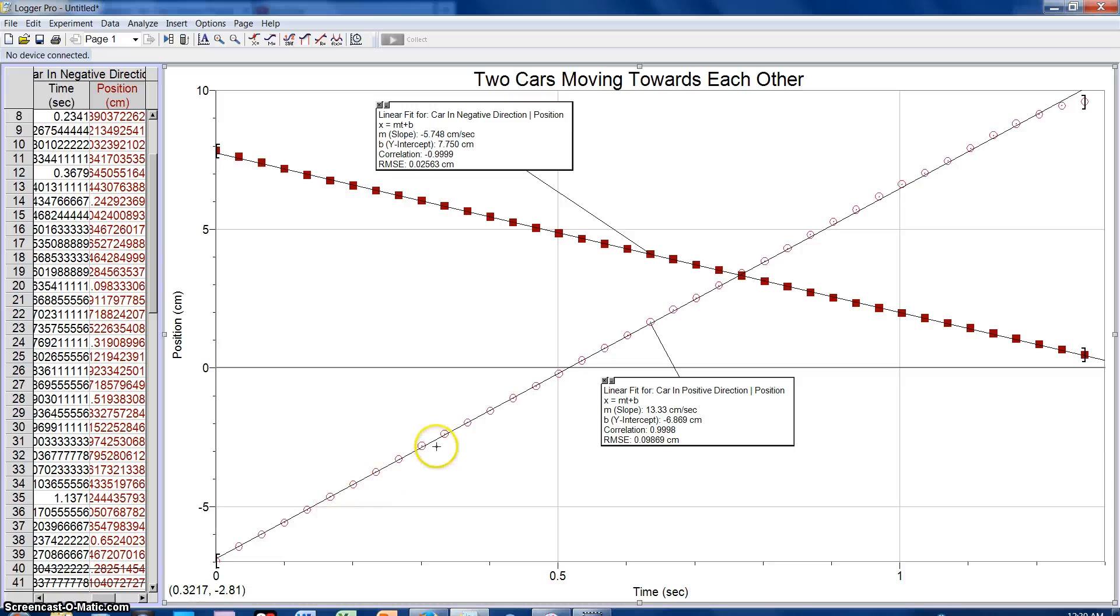Here we see the car that's moving in a positive direction from the initial position, the line for it. This car started approximately 7 centimeters in a negative direction from the initial position or starting point, and it moved approximately 13 centimeters per second towards the initial position, meaning for every second it moved approximately 13 centimeters in a positive direction.